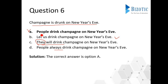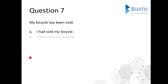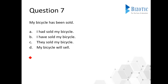That's question six. Moving on to question seven: 'My bicycle has been sold' — it's in passive, let's change it to active. The options are: A) 'I had sold my bicycle,' B) 'I have sold my bicycle,' C) 'They sold my bicycle,' and D) 'My bicycle will sell.' Option D is definitely wrong. Option C uses 'they,' which is unclear. So the answer has to be either A or B — the only difference being 'had' versus 'have.'